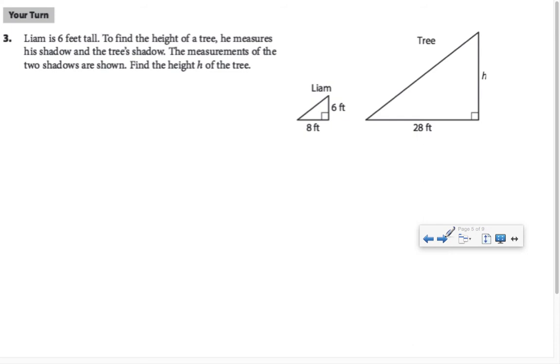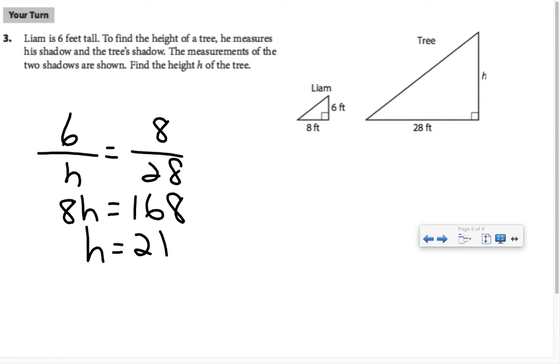In this example, Liam is 6 feet tall. He found his shadow to be 8 feet long. He wants to find the height of a tree whose shadow is 28 feet long. So 6 over H will equal 8 over 28. Cross-multiply and solve. I've got 8H equal to 6 times 28, which is 168. Divide both sides by 8, and H is 21. So the height of the tree is 21 feet.